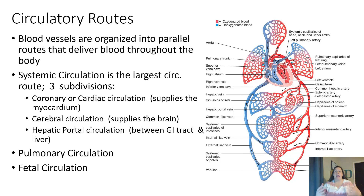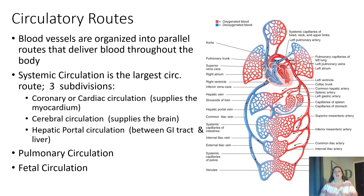If you'll notice, as those capillary beds are forming, they're actually forming the shape of a lot of these organs, like the liver, the stomach, the intestines, the brain, and even the lungs. Now, systemic circulation is the largest circulation route we're going to talk about, and there are going to be three kind of subdivisions: coronary or cardiac circulation to the heart itself, the myocardium muscle; cerebral circulation to the brain; and hepatic portal circulation, which is the circulation between the GI tract and the liver.